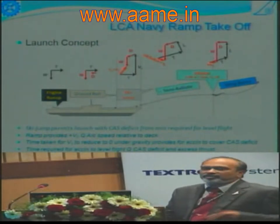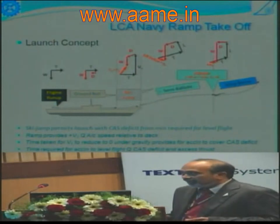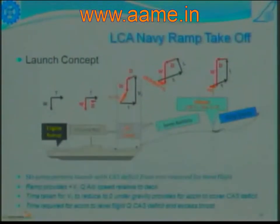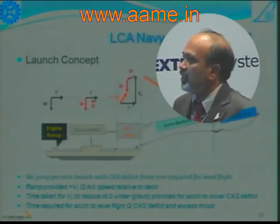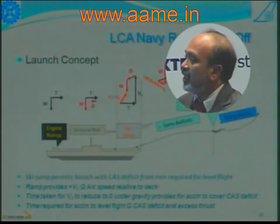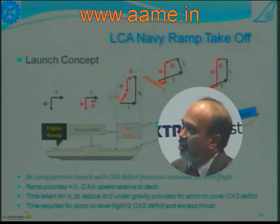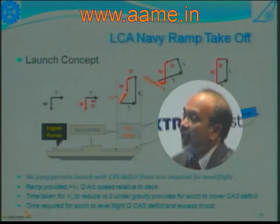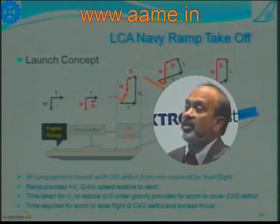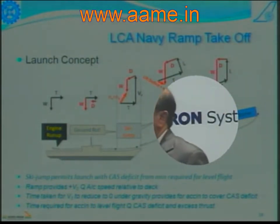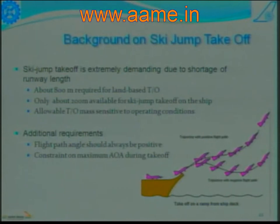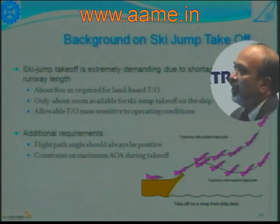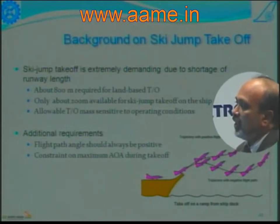The deck length available will typically be from about 160 to 200 meters, and you need to take off the same aircraft from that shorter length. That is an extremely challenging thing, because there are restrictions: one is the shortage of runway length, and it is also a very strong function of various other parameters like the mass and inertia of the aircraft. There are also additional requirements — in order not to disorient the pilot, we have to ensure that the flight path angle after leaving the ramp is always positive, meaning at no instant of time is the aircraft coming down. It also puts a constraint on the maximum angle of attack, beyond which you could run into a problem.